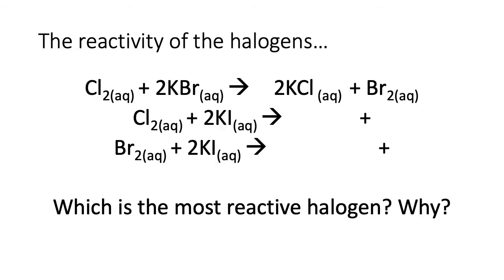For the reactivity of the halogens, have a go at the equations on screen. We did do this last lesson, so you can use your notes to help. The first one is done for you: chlorine reacting with two molecules of potassium bromide to form two molecules of potassium chloride and bromine. It's a displacement reaction — the most reactive halogen will displace the least reactive halogen in the compound, kicking it out and forming a molecule of that type.